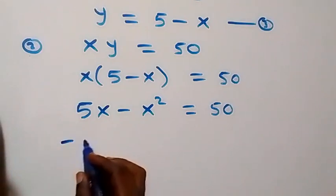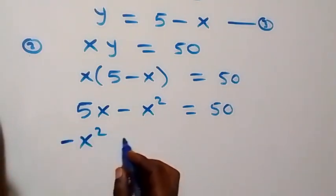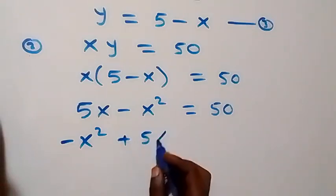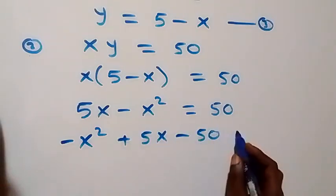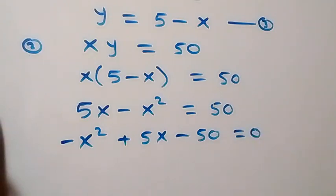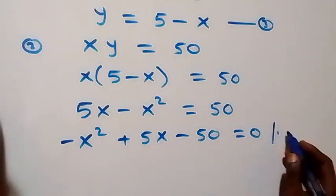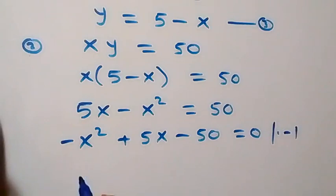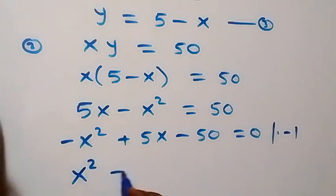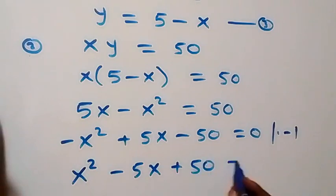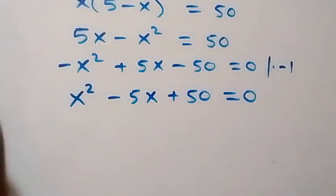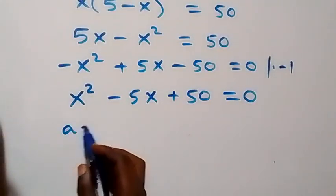Rearranging and taking 50 to this side, this becomes minus x squared plus five x minus 50 equals zero. Removing the minus by multiplying through by minus one, we get x squared minus five x plus 50 equals zero.